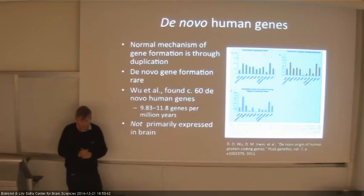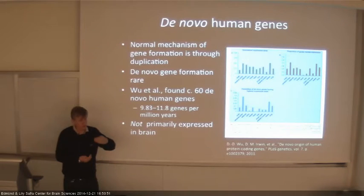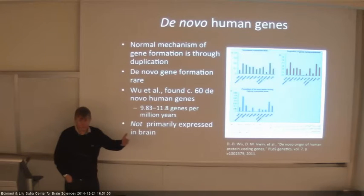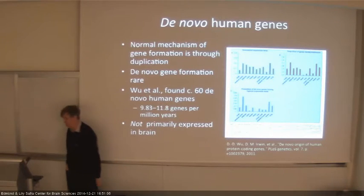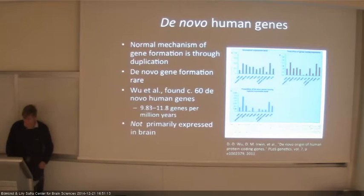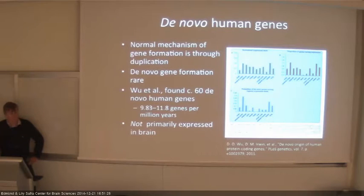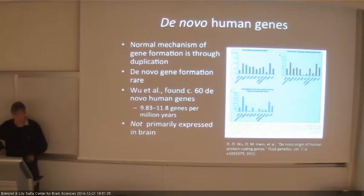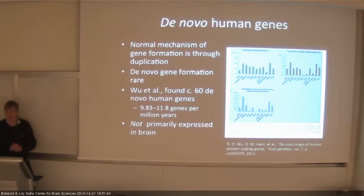De novo genes — sequences of DNA that were not there or not functional before — have been studied by Wu et al., who found there are probably about 60 completely new genes in humans compared to other primates. But interestingly, they're not mainly expressed in the brain. Most of the novelty is actually in our genitals, in the testes. So our pattern of reproduction has changed possibly more than our brain has changed.